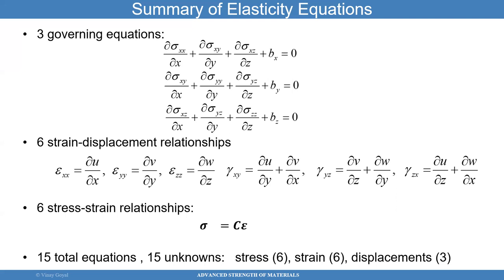To tackle that problem, we covered how these equations on this slide are helpful in figuring out when a structure fails and how and where. These are the three governing equations derived using Newton's law — F equals MA. We learned these equations are for a body that deforms. No dynamic terms were included, but we do have three body forces: the body force in the x, y, and z directions. The body force is a force quantity acting at every point of the body — one example is gravity.